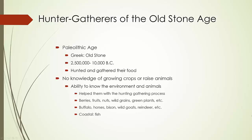That brings us to our Paleolithic ancestors — the Paleolithic Age. Paleo means old stone. This period spans about 2.5 million to 10,000 B.C. They hunted and gathered their own food, hence the term hunter-gatherer. They had no knowledge of agriculture or raising animals.